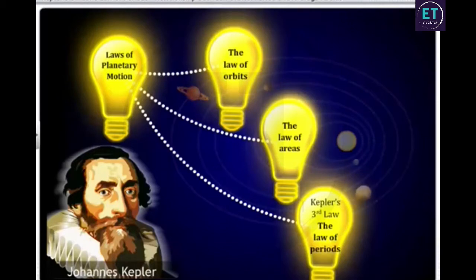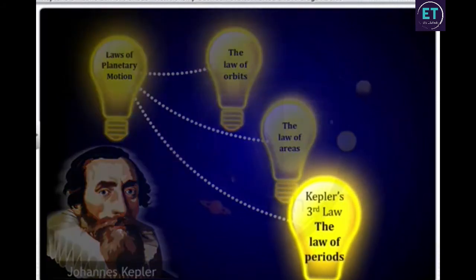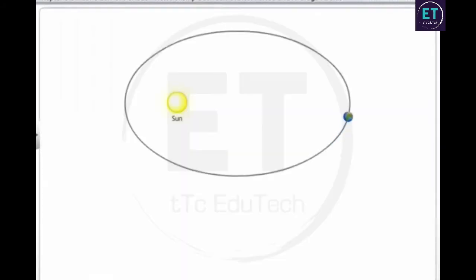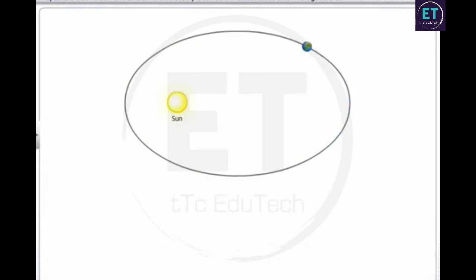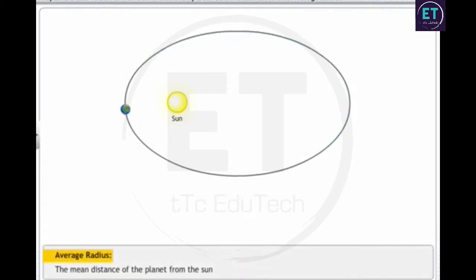Kepler's third law, the law of periods, defines the relationship between the orbital period of a planet and the average radius of its orbit. The orbital period of a planet, denoted by T, is the time taken by the planet to make a complete revolution around the sun along its orbit. The average radius of the orbit of a planet is also the mean distance of the planet from the sun.